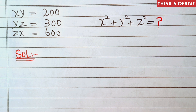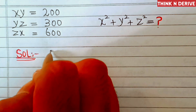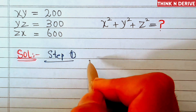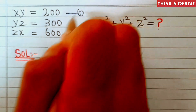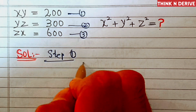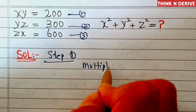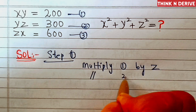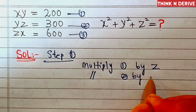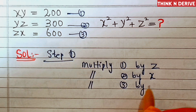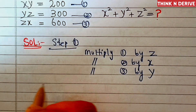We'll divide this question into three parts. In step number one, we'll label xy=200 as equation first, yz=300 as equation second, and zx=600 as equation third. We'll multiply equation first by z, equation second by x, and equation third by y.